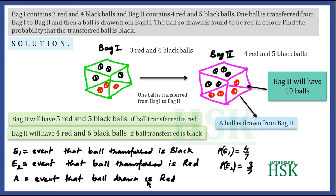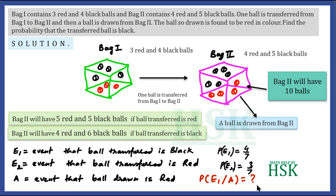Event A is the event that the ball drawn is red — the final drawing of the ball after adding the transferred ball, we draw a ball from Bag 2. This is event A. We have been given that the ball drawn is found to be red, so event A has occurred. We need to find the probability that the ball transferred is black, that is P(E1 | A) — probability that the ball transferred is black given that the ball drawn was red.